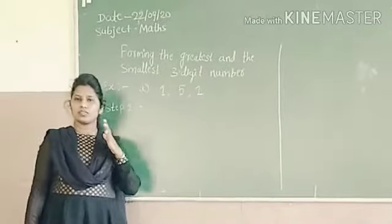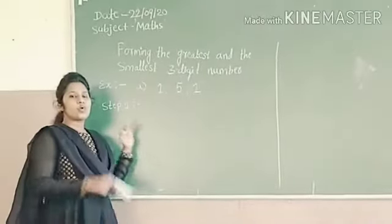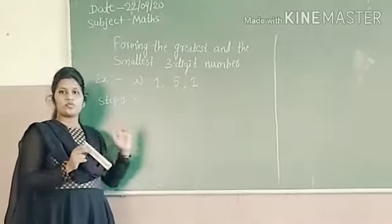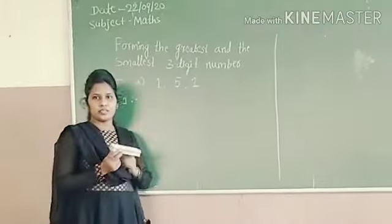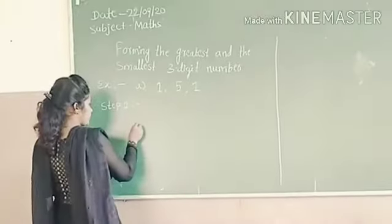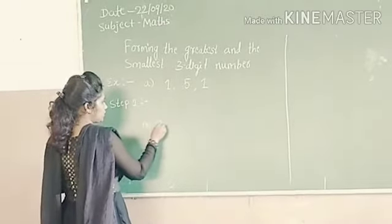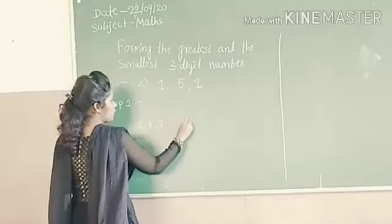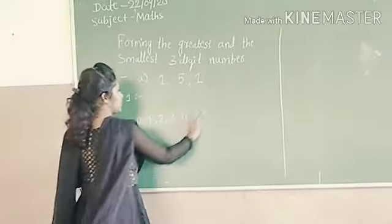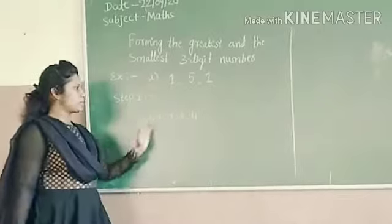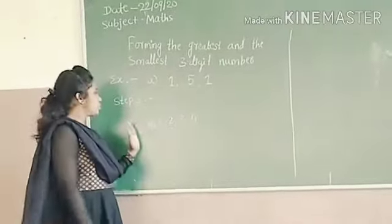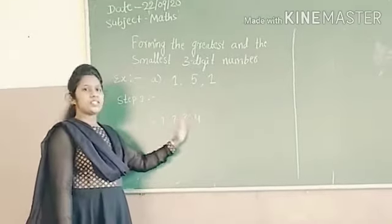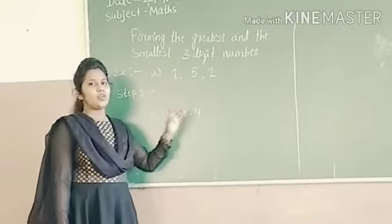Ascending order of numbers is from the smaller number to the bigger number. For example, 0, 1, 2, 3, and 4. These numbers are in ascending order, meaning from smaller to bigger number.